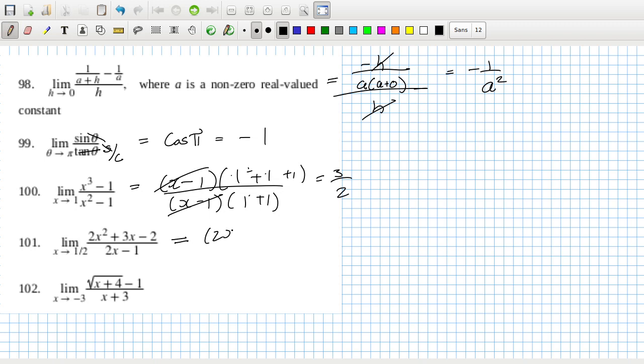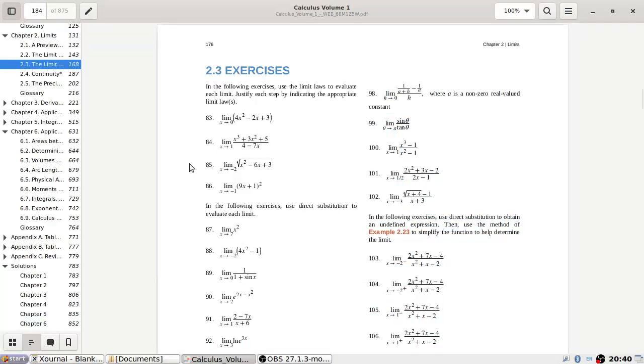Factorize the top as 2x minus 1 and then x plus 2 over 2x minus 1. Is that right? 2x squared plus 3x minus 2. They cancel and then you put x as a half, so that is 5 over 2. And then lastly, that looks hard. This one might require a bit of brain power. Let's check that these are right first before proceeding.